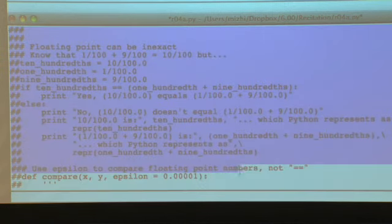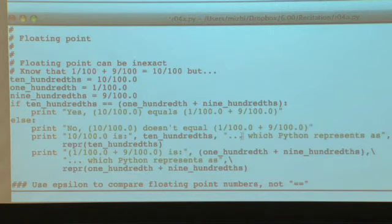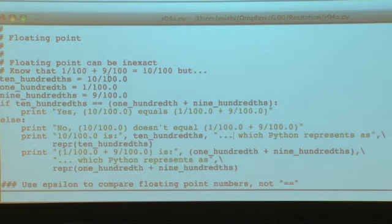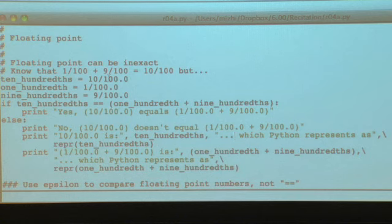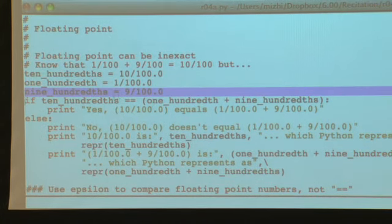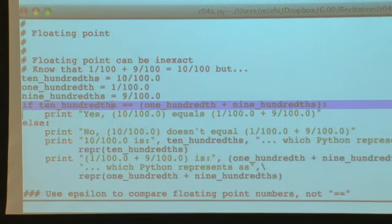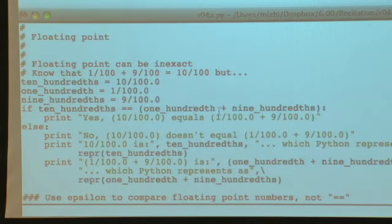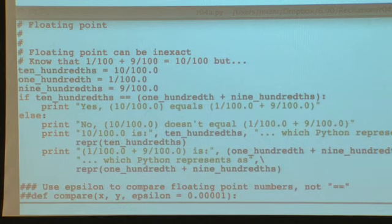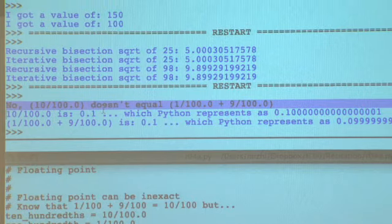We've talked about floating point to death, but we want to really emphasize it because even for experienced programmers, it still trips us up. The thing we want you to understand is that floating point is inexact. You shouldn't compare for exact equality. Looking at the code here, I have 10 hundredths, which is 10 over 100, and 1 hundredth and 9 hundredths. In real math, this condition would be true. I add 1 hundredth and 9 hundredths, I should get 10 hundredths. But because we're dealing in computer land, we don't get that.